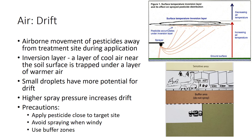Drift is most serious when applications are made in windy conditions. Low relative humidity and high temperatures increase the potential for drift by causing spray droplets to evaporate faster. Air temperature also contributes to pesticide drift by creating inversion layers, where a layer of cool air near the soil surface is trapped under a layer of warmer air. During a pesticide application, inversion layers will cause fine spray droplets and pesticide vapors to become trapped, forming a concentrated cloud that can move from the treatment site.